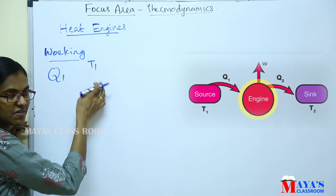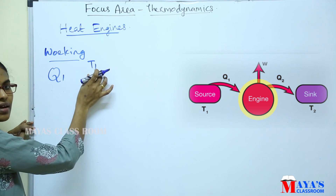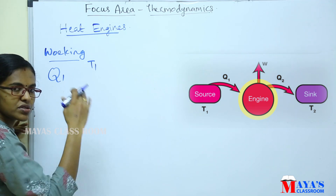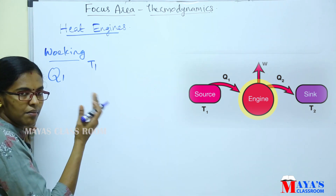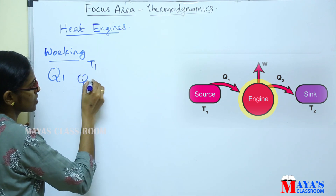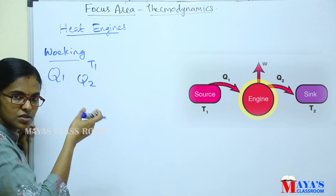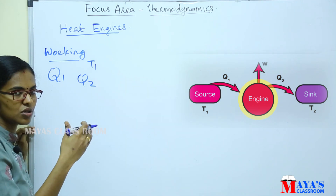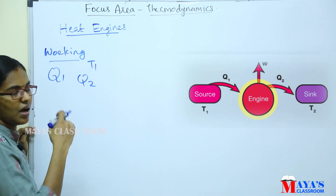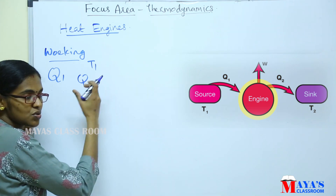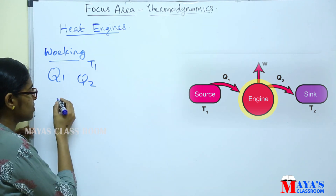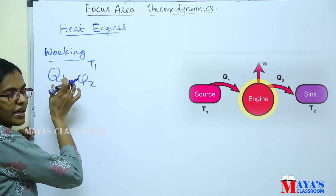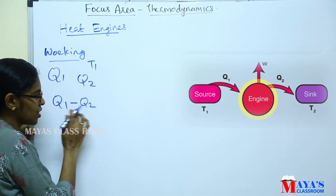When the source is at temperature T1, the working substance absorbs a quantity of heat Q1 from the source. The energy undergoes the cyclic process, and the other amount of energy Q2 is rejected. So the working substance absorbs Q1 from the high temperature source and rejects Q2 to the low temperature sink.